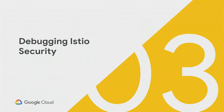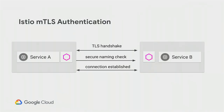Handing back to Megan for the authentication demo. Istio supports both authentication and authorization: end-user authentication with JWT tokens, service-to-service authentication with MTLS, and Kubernetes RBAC. For this demo, the focus is on MTLS authentication. With MTLS, a TLS handshake occurs, service A does a secure naming check comparing the service account against the actual running pod, and a TLS connection is established.